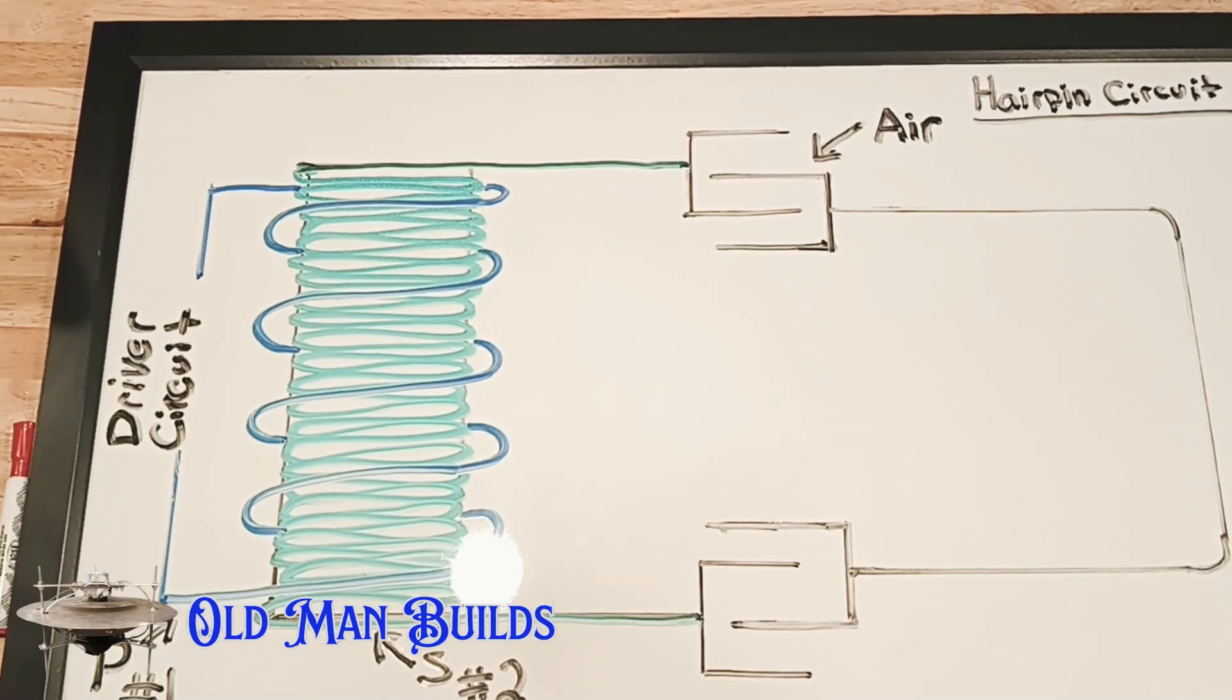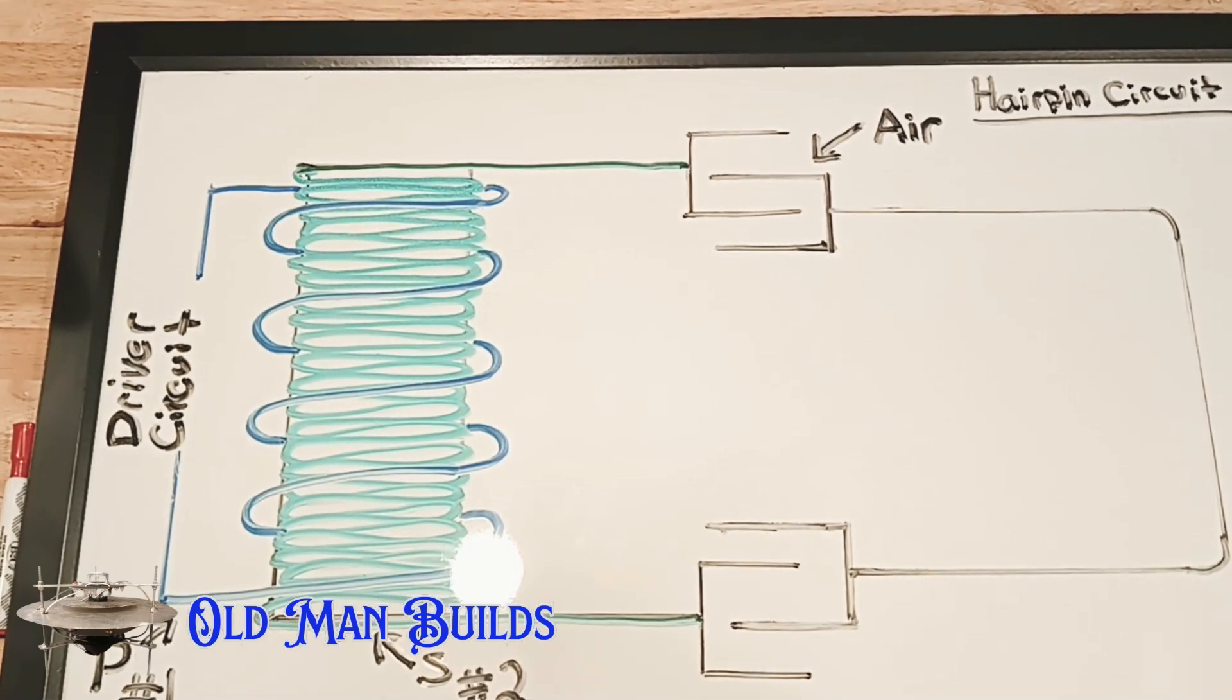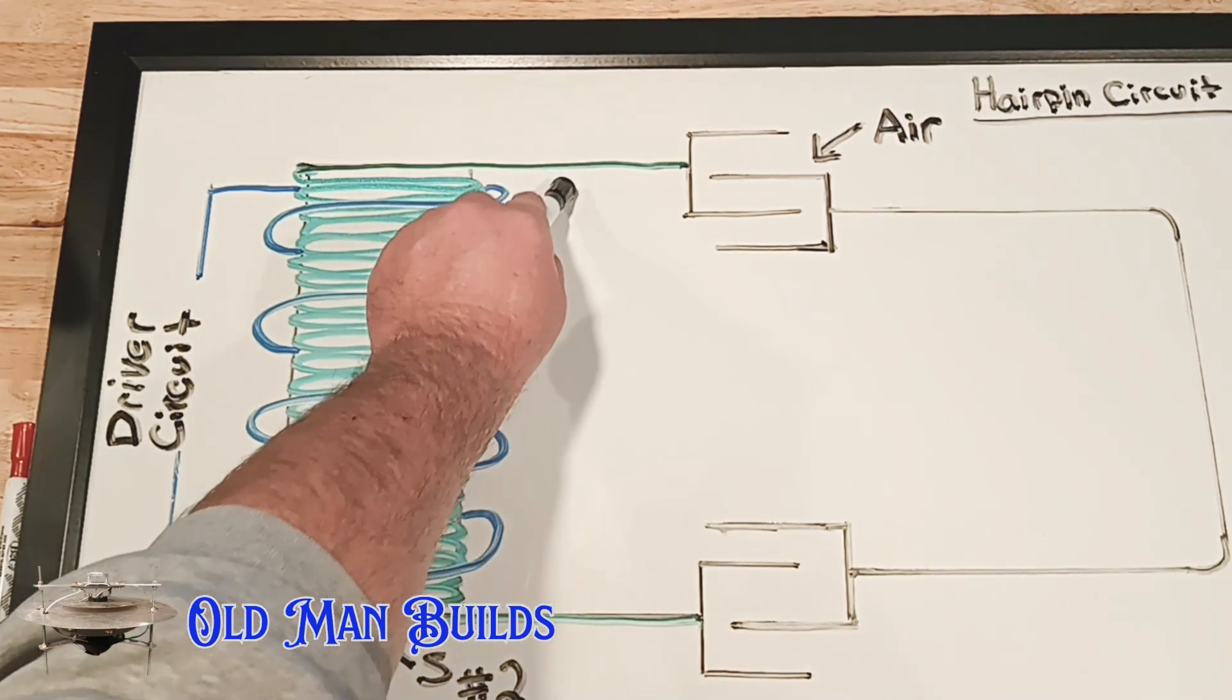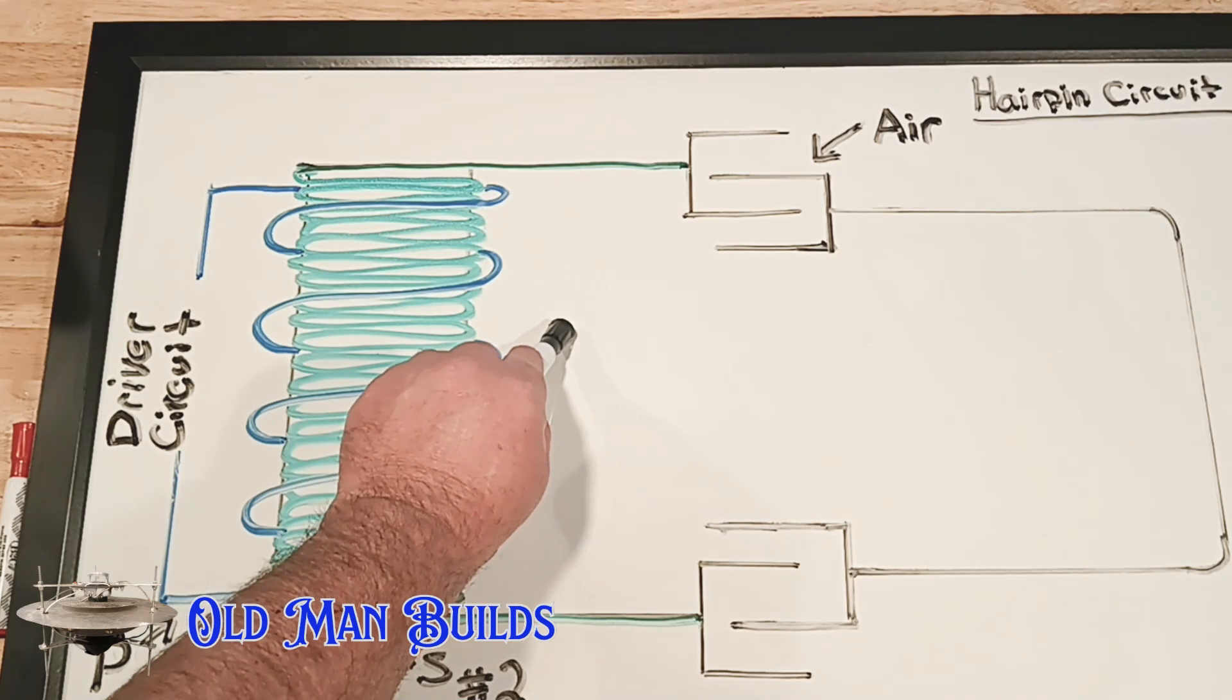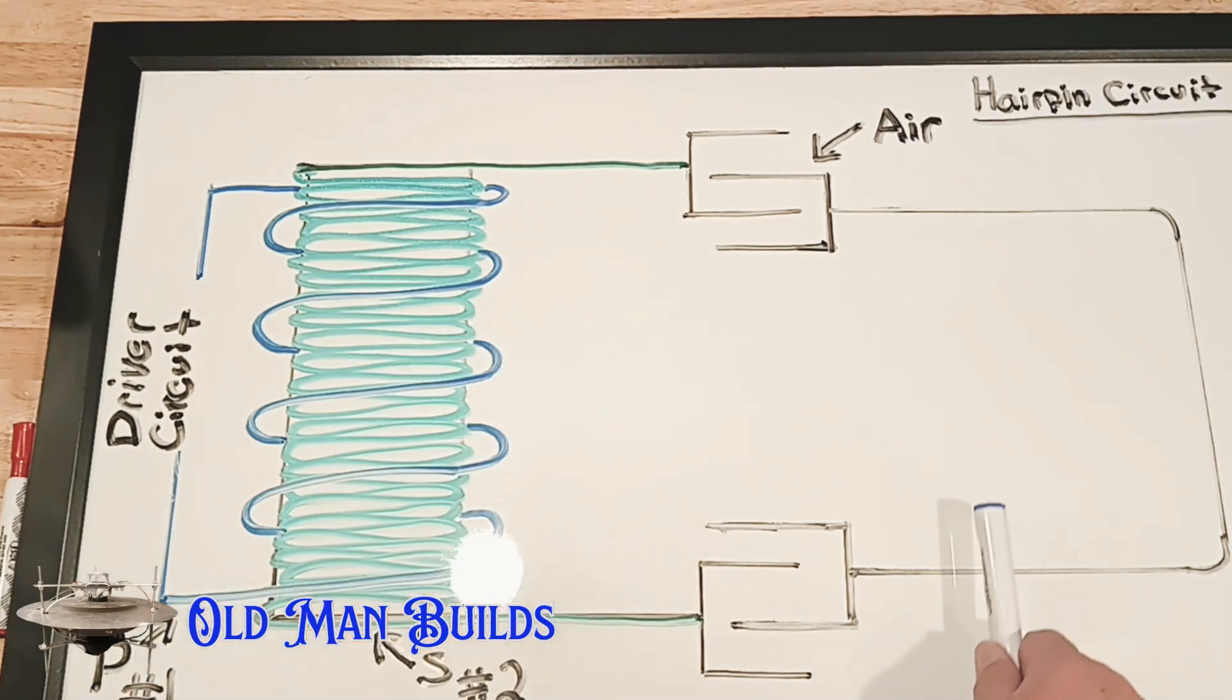We're going to take a look right now at Tesla's hairpin circuit. There's a few things missing here. Across here there's a spark gap, and over here there's two connectors that go in right there and they generally would go to a metal plate on each side. That's ultimately unimportant right now for the reason we're building this.